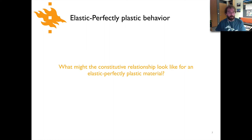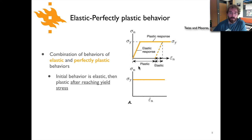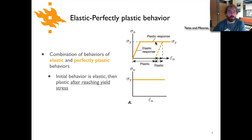Elastic perfectly plastic behavior is basically a combination of those two deformation mechanisms — some part elastic, some part perfectly plastic. Looking at the plot with normal stress on the vertical axis and normal strain on the horizontal axis: just as you'd expect for an elastic material, there is an initial linear relationship where increasing stress results in increasing strain, until you reach the plastic yield stress at which point the relationship flattens out. Once the material becomes plastic it stays at that yield stress value.